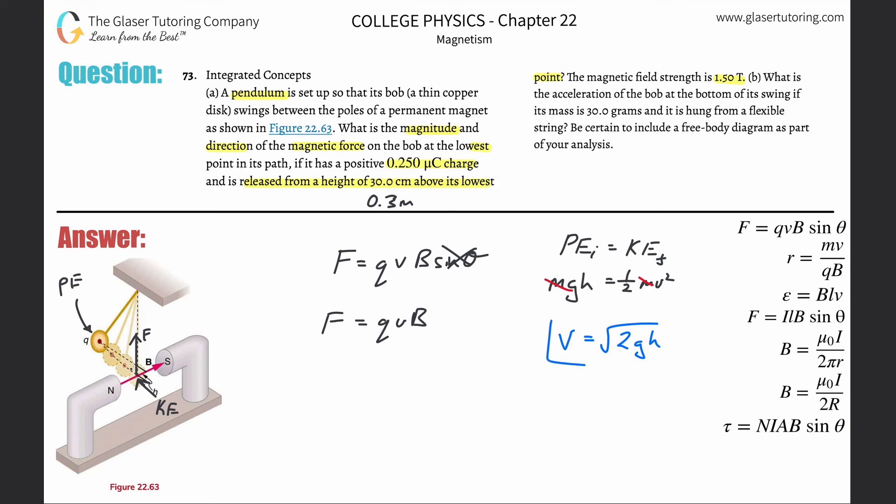Now we know the height it was released at, we know gravity, so we just plug it in. F is equal to q times square root of 2gh times magnetic field. Plug it all in: 0.25 micro coulombs, we need that in coulombs, so that works out to be 0.25 times 10 to the minus 6th coulombs, square root of 2 times 9.81 times the height of 0.3 meters, and then multiplied by the magnetic field strength of 1.5.